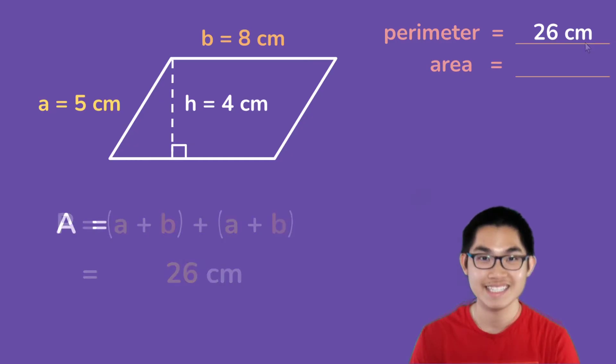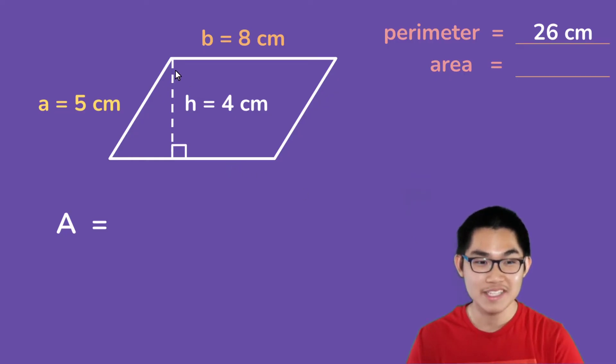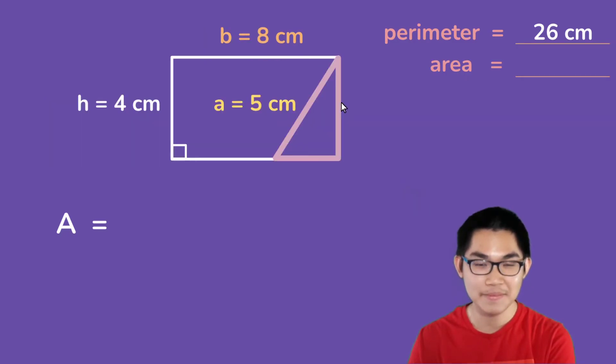Now finding the area of parallelograms is a bit more tricky, but I'm going to show you a perfect way to remember how to do that. So if you look at this parallelogram, you see this piece right here, it looks like a triangle. So I'm going to take this piece and move it to the right side. Now do you recognize what this shape is? It looks like a rectangle.